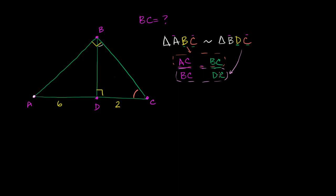But now we have enough information to solve for BC. We know that AC is equal to—we know that AC is equal to 8. 6 plus 2 is 8. And we know that DC is equal to 2. That's given. And now we can cross multiply. 8 times 2 is 16 is equal to BC times BC, is equal to BC squared. And so BC is going to be equal to the principal root of 16, which is 4.